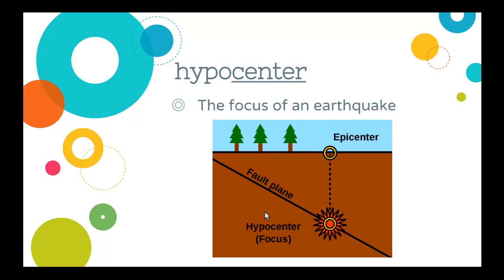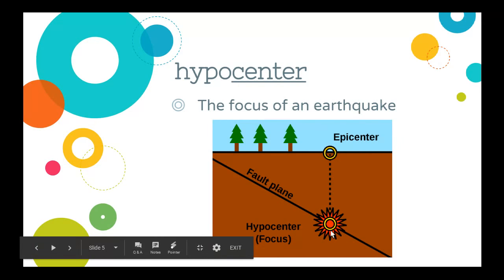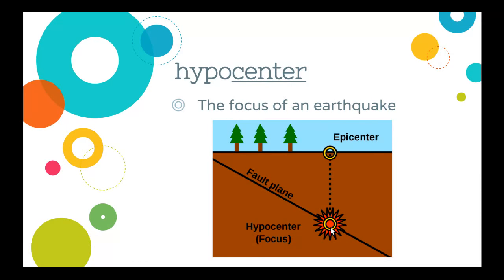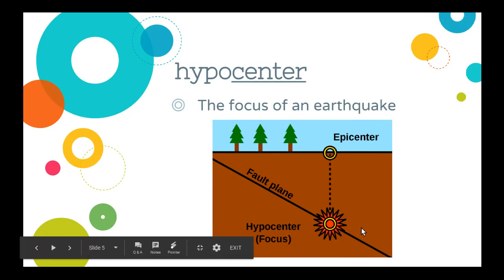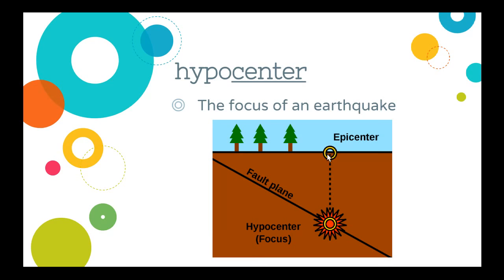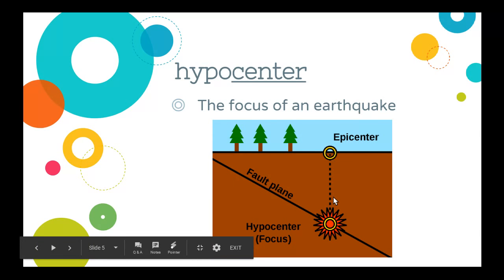Next is 'hypocenter,' which is related to the epicenter. This picture does a good job of explaining both of them. The hypocenter is the focus of an earthquake — it is the part under the ground. In this picture, here's the fault plane where the earthquake happens underground. This is the hypocenter, and directly above it on the surface of the earth is the epicenter.